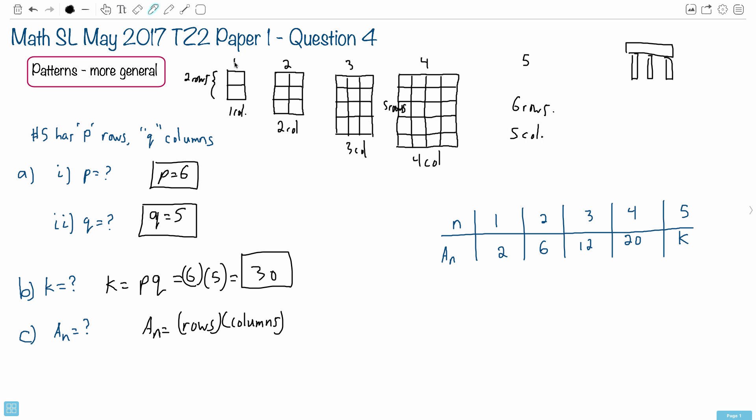So look, when n is 1, there's 2 rows. When n is 2, there's 3 rows. When n is 3, there's 4 rows. So does it make sense to you that the number of rows is just going to be whatever n is and just add 1.